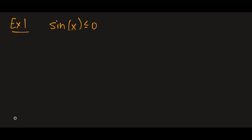Let's look at an example. Example one is fairly straightforward: when is sine of x less than or equal to zero? The instructions are to find the exact answer in interval notation, restricting x to be between zero and two pi.